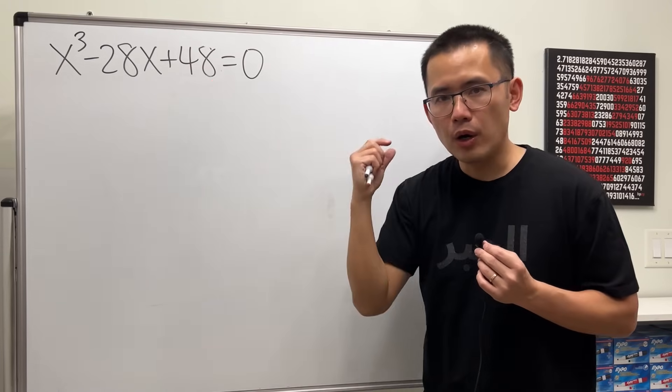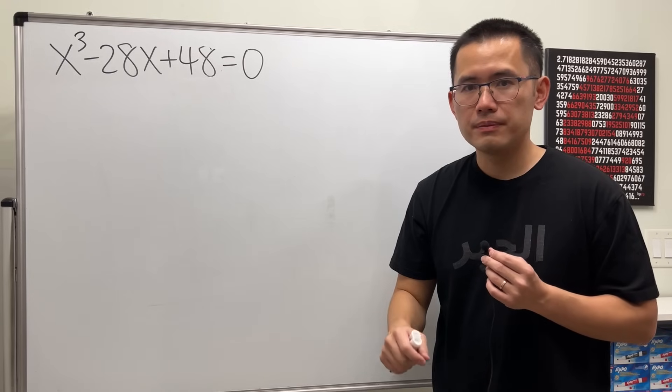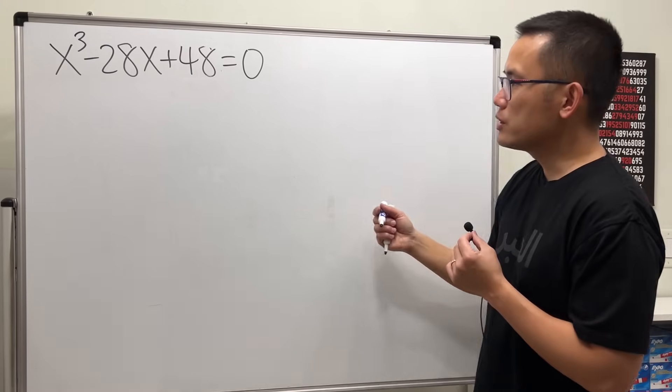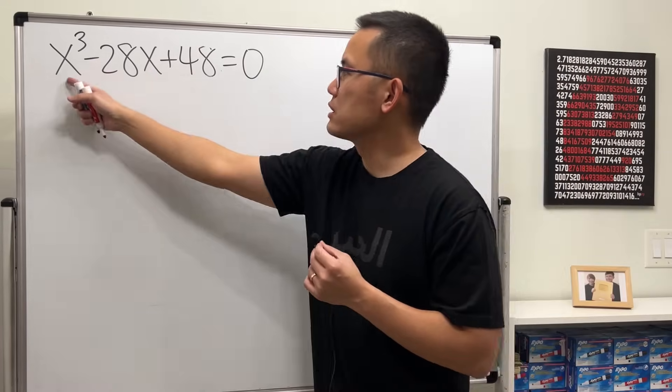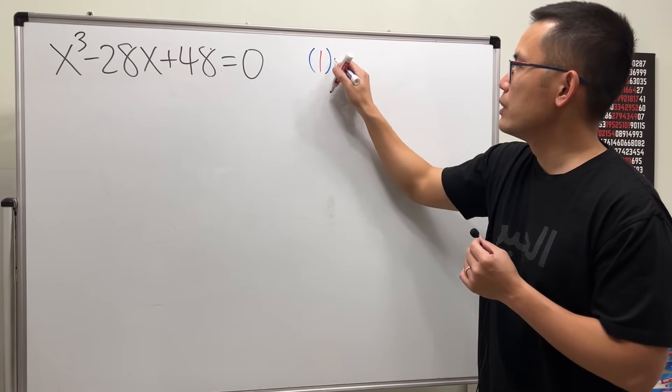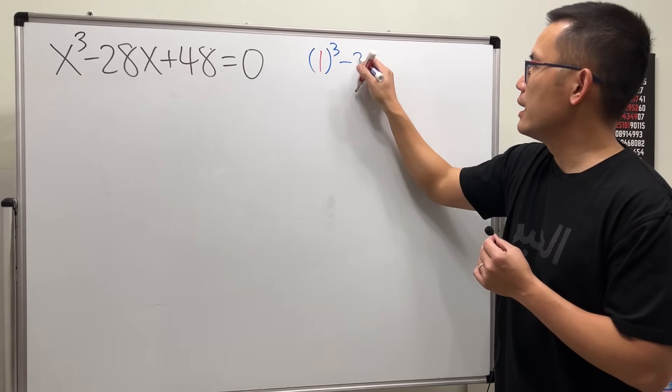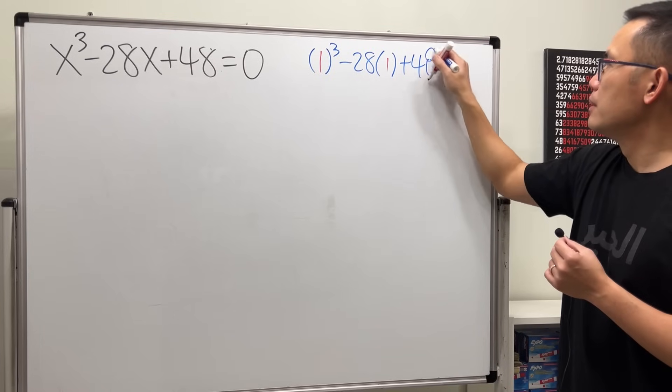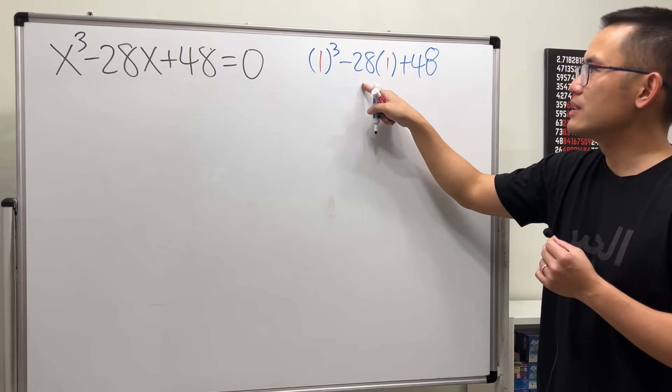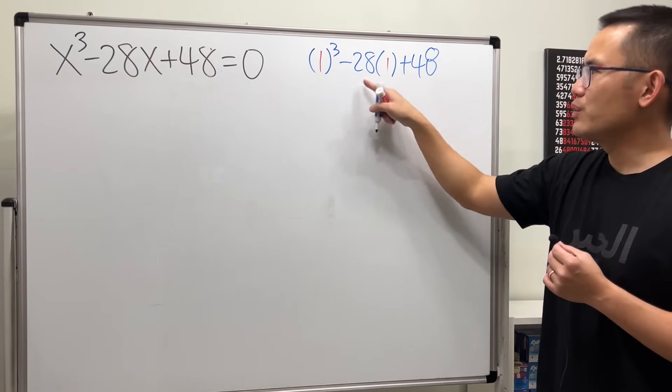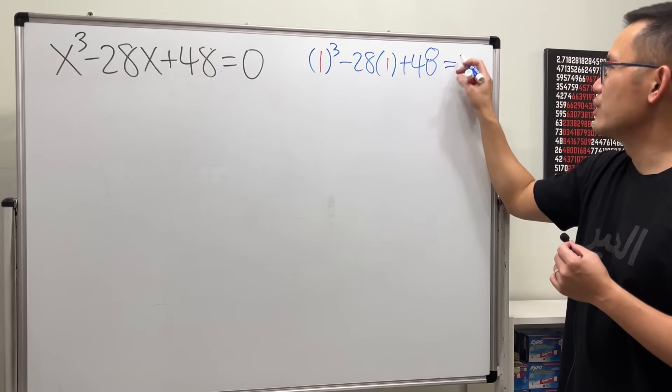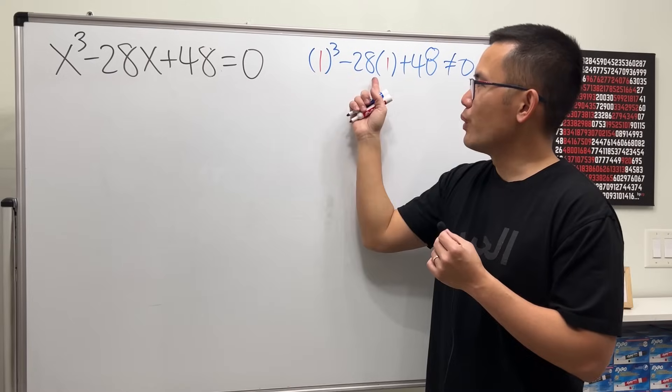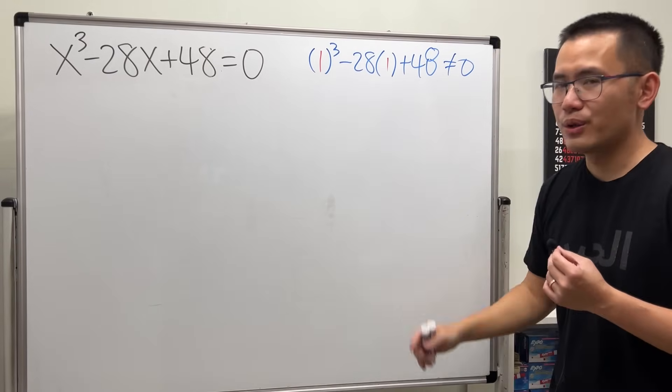1 times 48 is 48, so the factor is 48. I'm just going to check if 1 works, so I'm going to plug in 1 into the x and let's see if that will give me zero. But it's not, because this is 1 minus 28, which is negative 27 plus that. This is not going to give me zero. And once you put 1, you can also check negative 1, but you can see it's not going to work either.